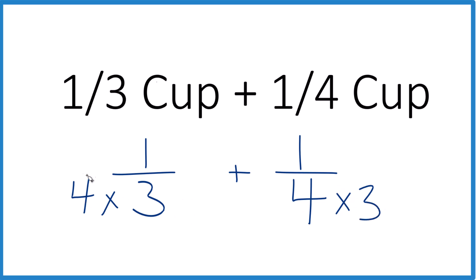But we can't just do it to the bottom. We need to do it to the top as well. 4 over 4 is 1, so we're just multiplying by 1. It doesn't change the value, just the way it looks. Over here, multiply by 3 over 3.